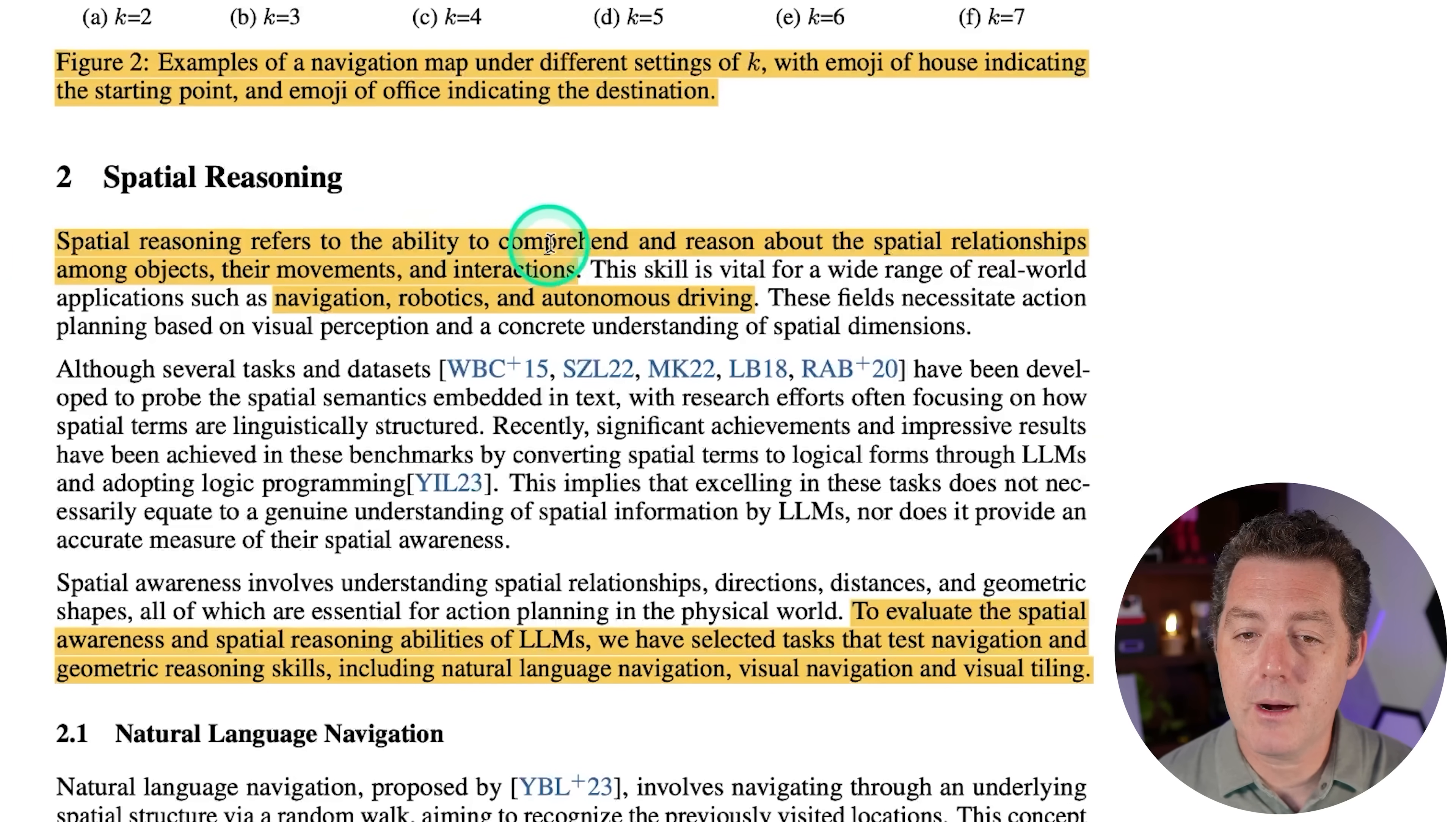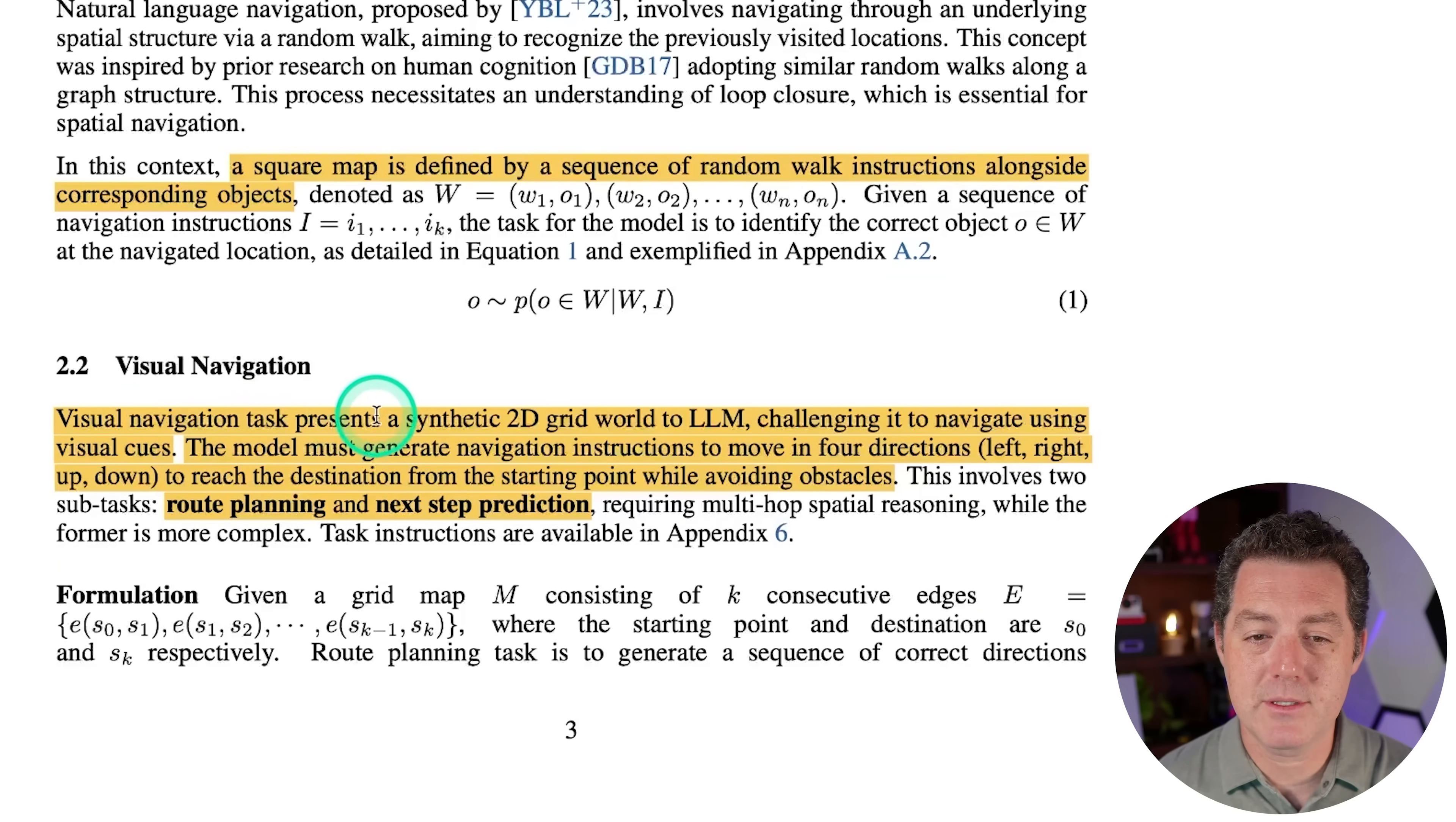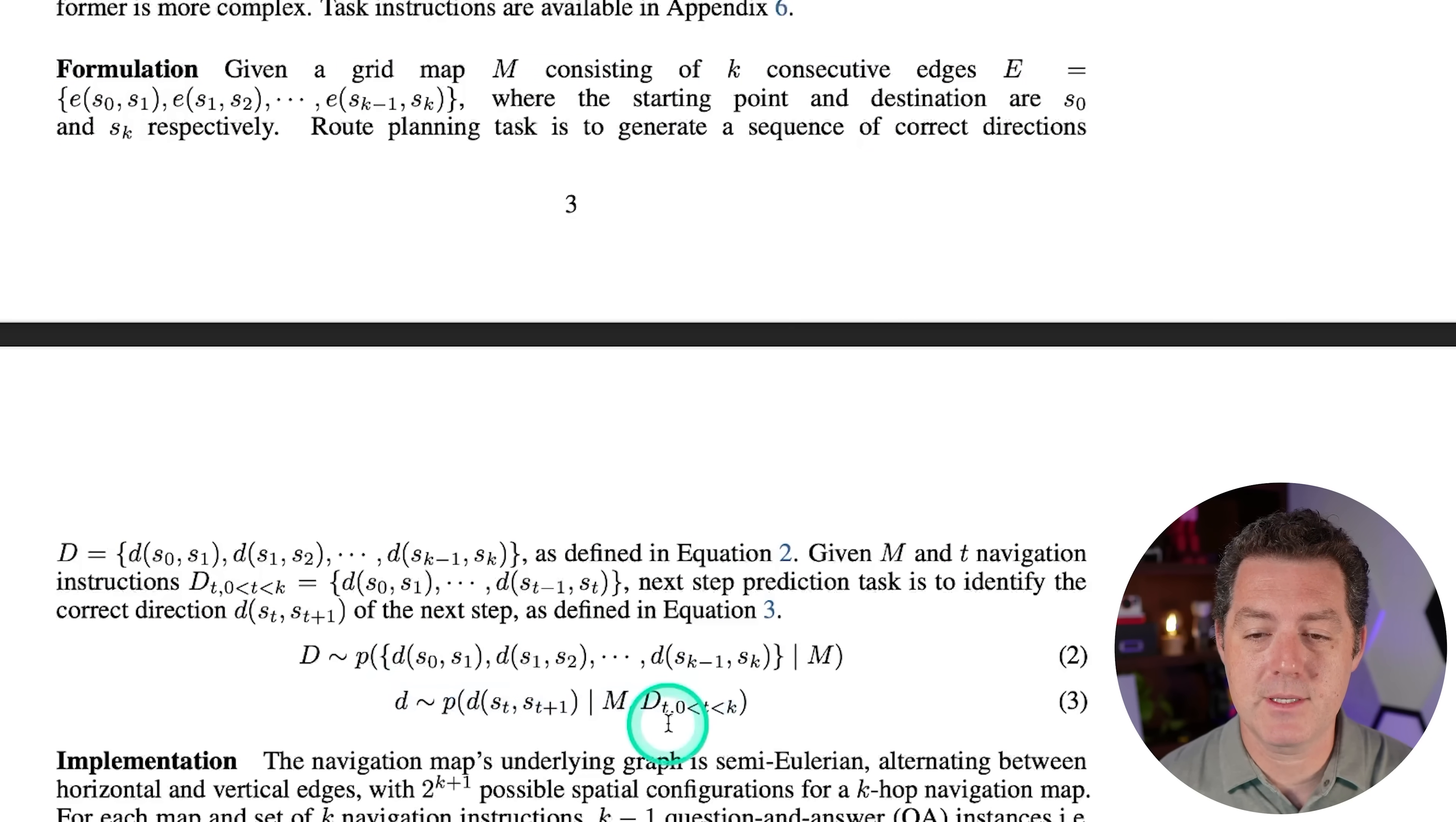But this is spatial awareness. This is spatial reasoning, and this is very difficult for large language models to date, but not anymore. So spatial reasoning refers to the ability to comprehend and reason about the spatial relationships among objects, their movements, and interactions. And these can be applied in the context of technology to navigation, robotics, and autonomous driving. So here they say in this context, a square map is defined by a sequence of random walk instructions along corresponding objects, denoted as, and then they actually just give the algorithm to denote the graph and the walking path. Then we have visual navigation. So visual navigation task presents a synthetic 2D grid world to LLM, challenging it to navigate using visual cues. The model must generate navigation instructions to move in four directions, left, right, up, down, what we just talked about. To reach the destination from the starting point while avoiding obstacles.